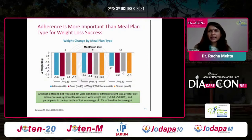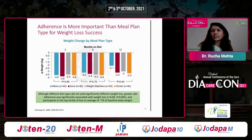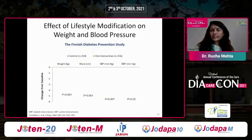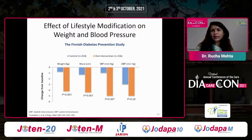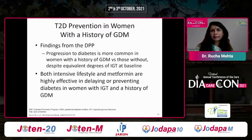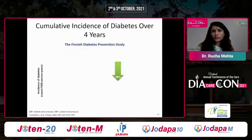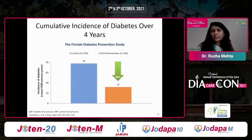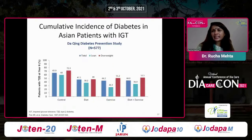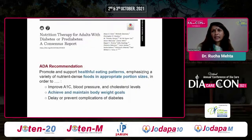Sticking to a meal plan is more important than which specific meal plan you follow — whether it's Atkins, Zone, or Weight Watchers. As weight goes down, waist circumference and blood pressure improve, addressing multiple components of metabolic syndrome. Similar effects were seen in gestational diabetes women in the DPP subgroup, and in Asian patients with IGT in the Phoenix Diabetes Study.